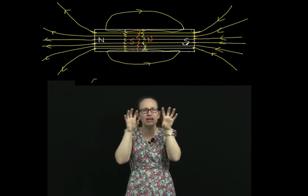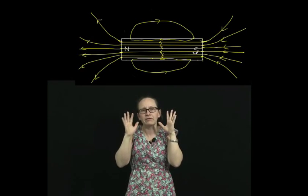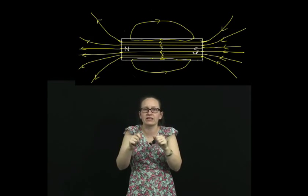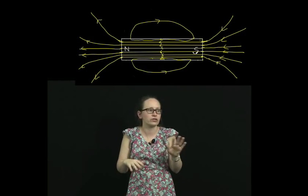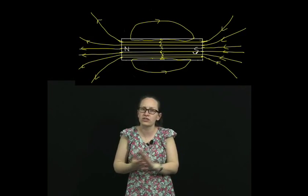Now if we want to see magnetic field lines, we can see them by sprinkling some iron filings on top of a magnet. So let's do that now.